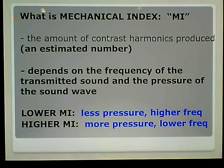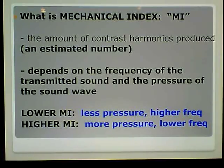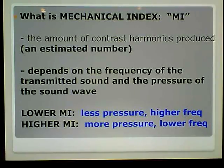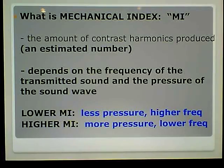Here's the rule to grasp: a lower MI, or lower amount of contrast harmonics produced, means you have less pressure and higher frequency. A higher MI, or more contrast harmonics produced, means you will have more pressure and a lower frequency. You need to stick that in your brain.